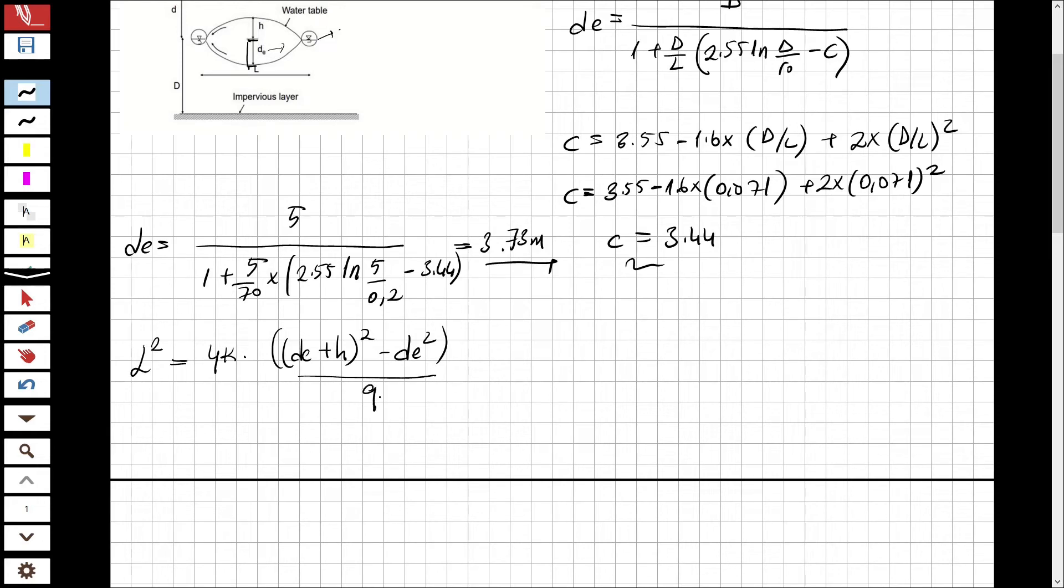Let's apply the formulation. l square is, l is here in the question, 70. In the parentheses: 3.73 plus h square minus 3.73 square.